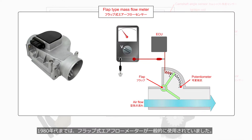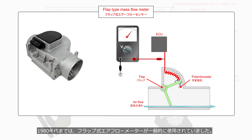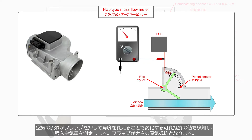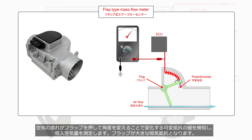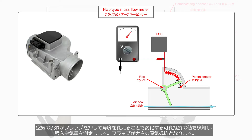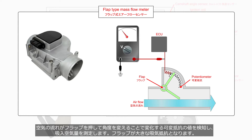Until the 1980s, flap type mass flow meters were commonly used. The airflow pushes the flap and alters its angle. The ECU monitors the electrical resistance of the potentiometer and determines air volume. However, the flap creates a significant intake resistance.